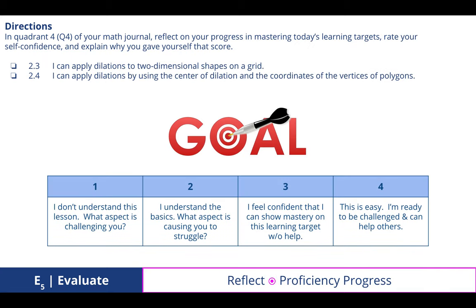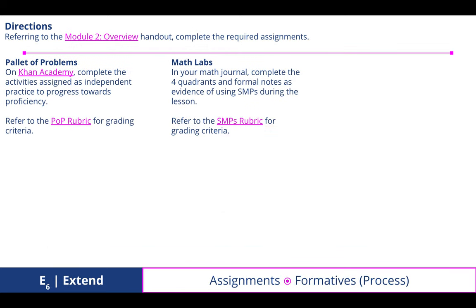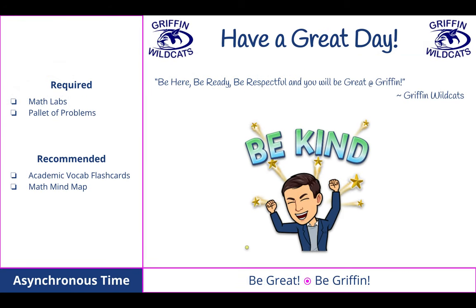In quadrant 4 of your math journal, reflect on your progress and match today's learning targets. Rate your confidence and explain why. I've assigned 10 Khan Academy activities that includes videos and exercises, and make sure you've completed your four quadrants and notes for today's lesson. Please be here, be ready, be respectful, and you will be great at Griffin. Remember to be kind to one another. Have a great day.